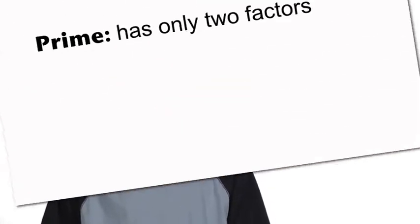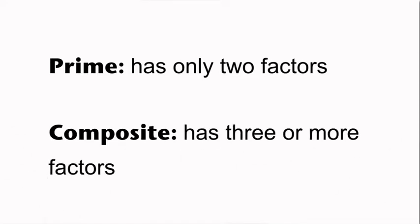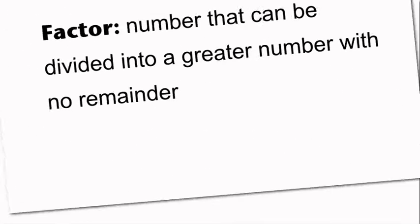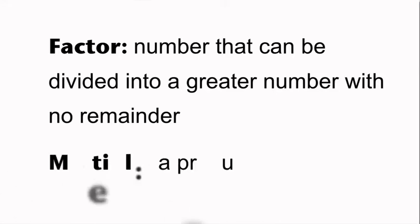Let's talk about these four words. A prime number has exactly two factors: one and itself. A composite number is a number that has three or more factors. Factors are numbers multiplied together to get a product. Factors can be divided into larger numbers with no remainder.